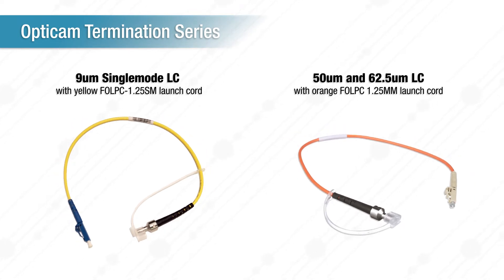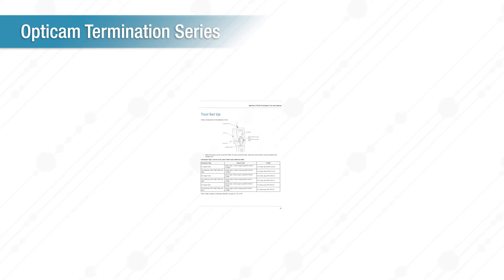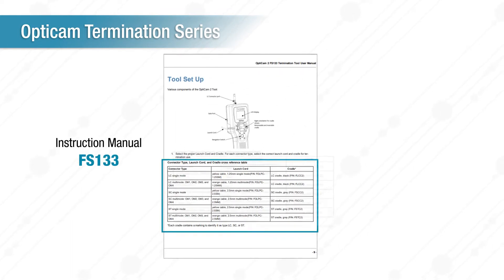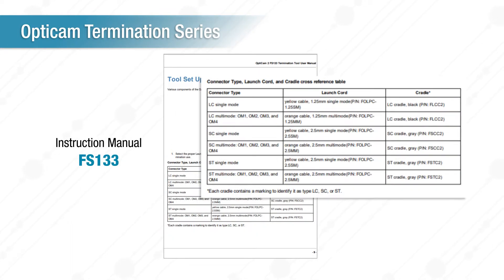To do one of these connector types, ensure the proper settings have been selected on the tool and then follow the termination process as normal. Please refer to Instruction Manual FS-133 to review the correct launch cord required for these terminations.